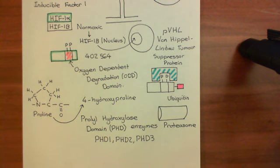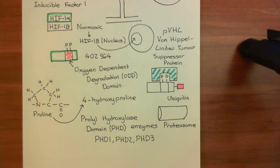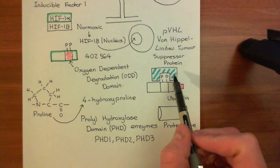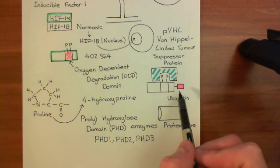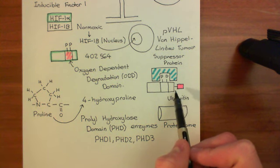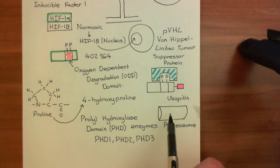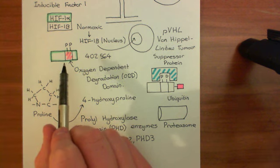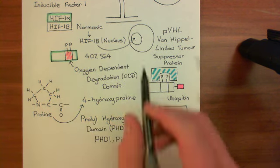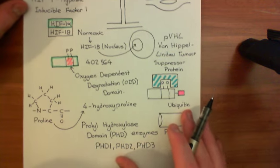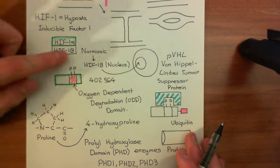When the cell becomes hypoxic with low oxygen levels, you can no longer hydroxylate the proline residues in the ODD domain of HIF-1 alpha — they stay as normal proline residues. This means pVHL cannot bind to them, so HIF-1 alpha is spared ubiquitination, not fed through the proteasome, and not destroyed. HIF-1 alpha remains within the cell and goes into the nucleus where it meets HIF-1 beta, finally forming the HIF-1 heterodimer complex.